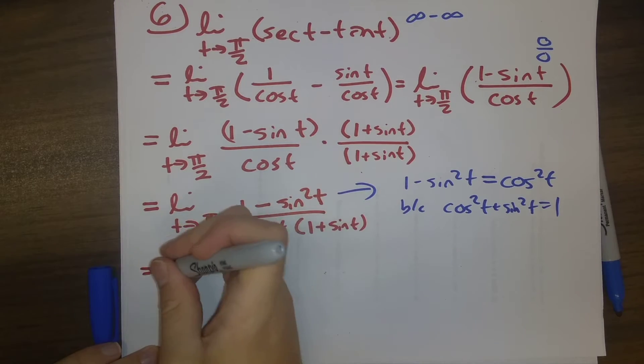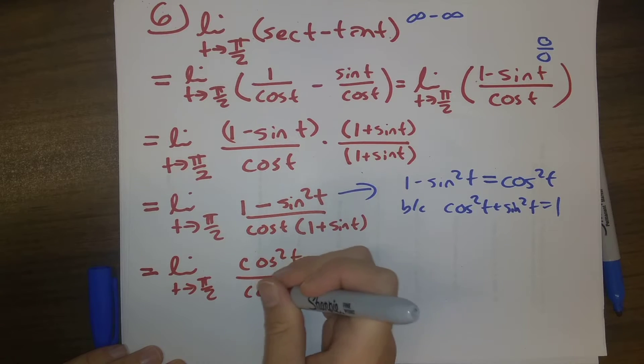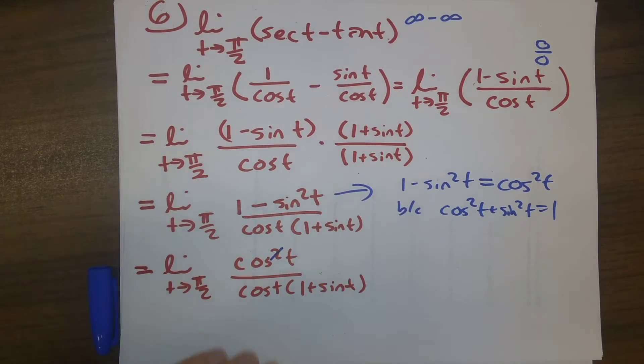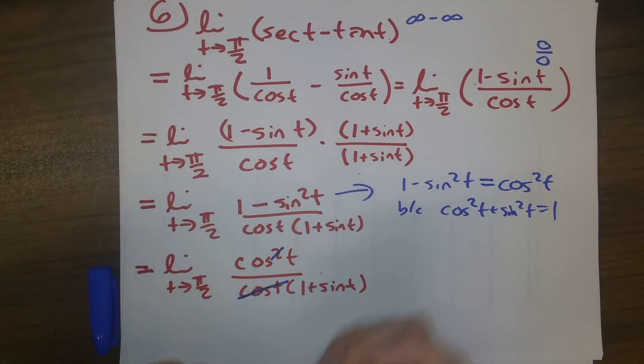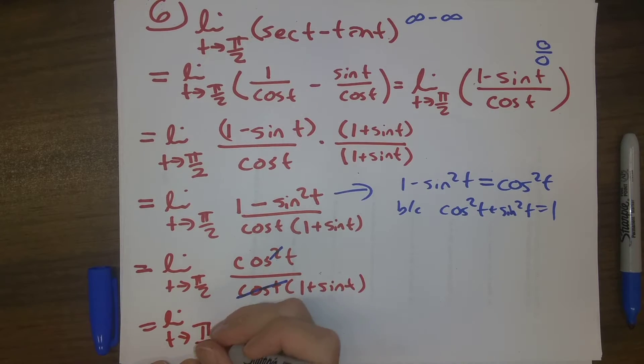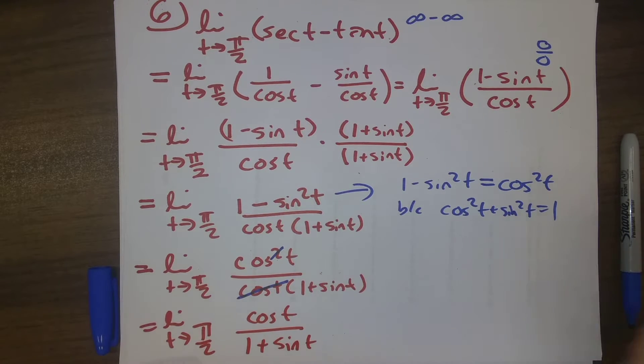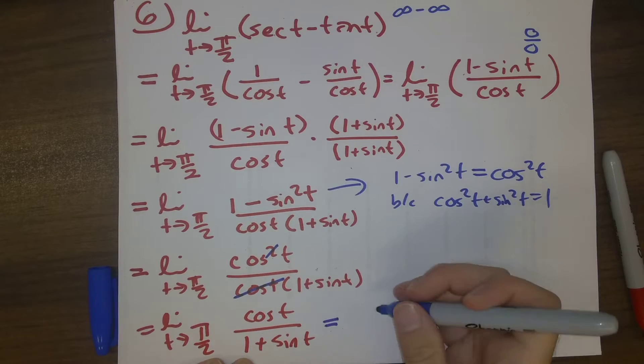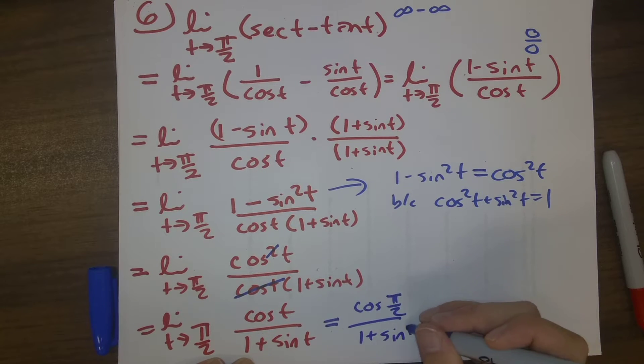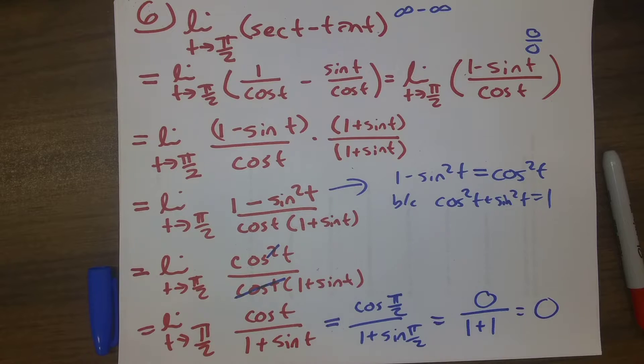So we can replace the numerator with cosine squared t. And now we can cancel out one of the factors of cosine t in the numerator with the factor of cosine t in the denominator. The limit as t goes to pi over two of cosine t over one plus sine t. Now when we plug this in, we don't get a zero over zero indeterminate form. Cosine of pi over two over one plus sine of pi over two is zero over one plus one. Sine of pi over two is one, and so our final answer here is zero.